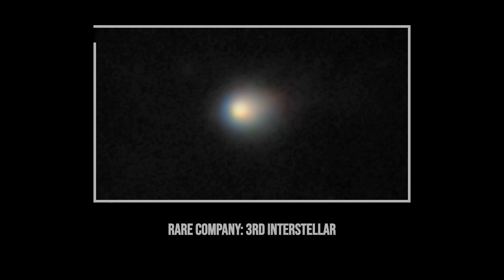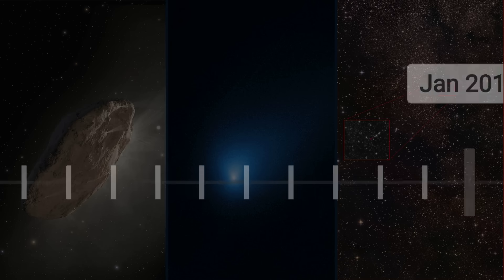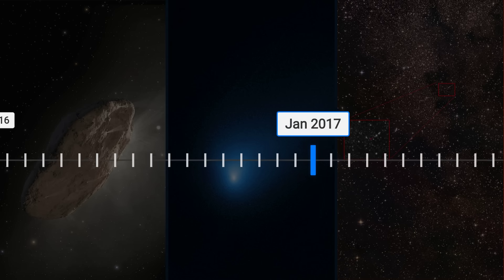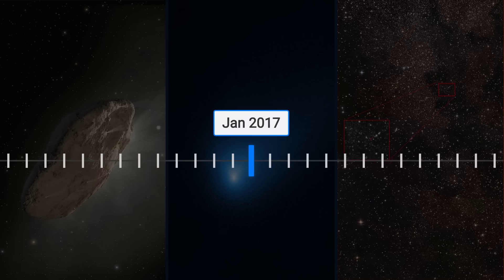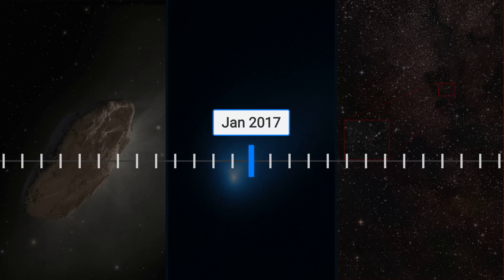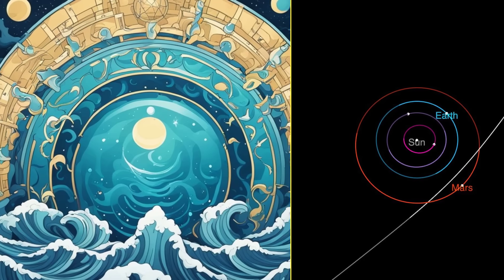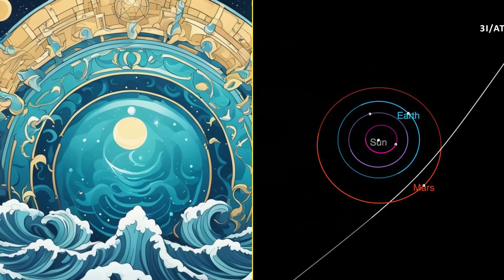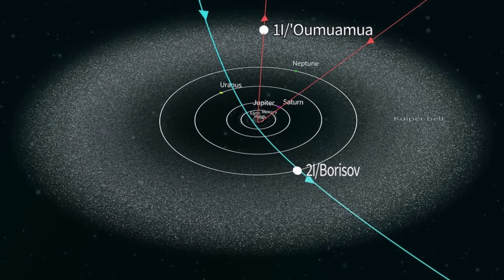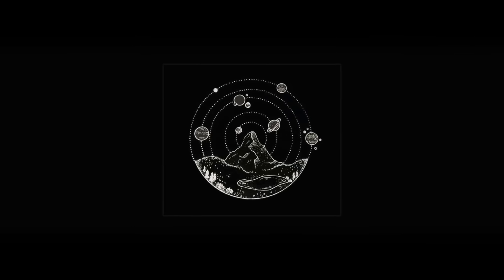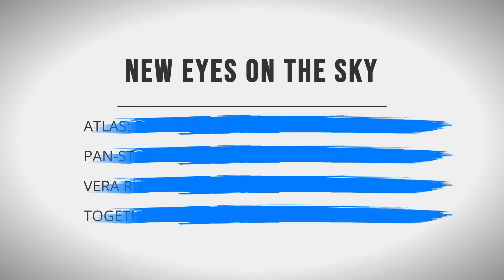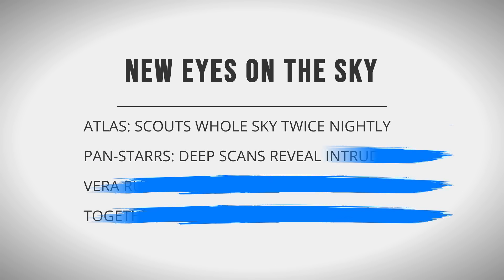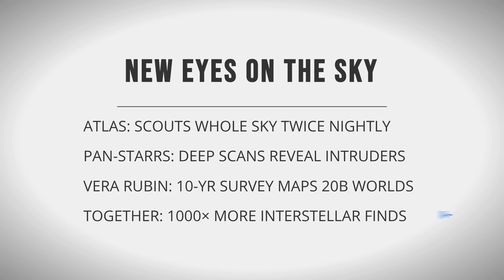That number alone puts it in rare company. For perspective, Oumuamua in 2017 and Borisov in 2019 were the only two confirmed before it. Each discovery felt like a cosmic lottery win. Now, in less than a decade, three have been found. That's not just luck. It's a sign that our new generation of sky surveys—ATLAS, PANSTARS, and soon the Vera Rubin Observatory—are finally catching what's always been out there, moving fast and hidden in plain sight.